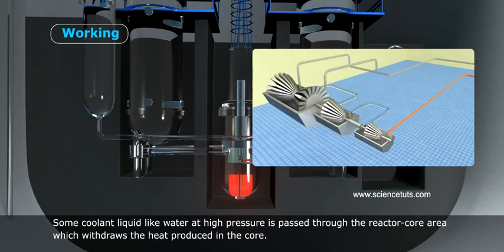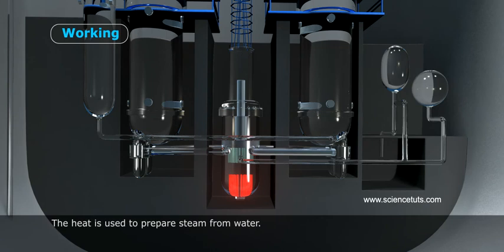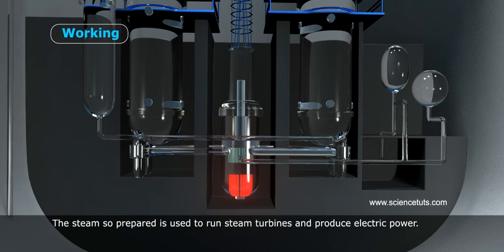Some coolant liquid like water at high pressure is passed through the reactor core area which withdraws the heat produced in the core. The heat is used to prepare steam from water.